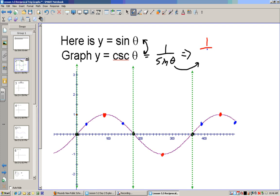What's 1 over 1 half? Well 1 divided by 1 half is 1 times 2 over 1, which is 2. So when sine is 1 half, cosecant is 2.